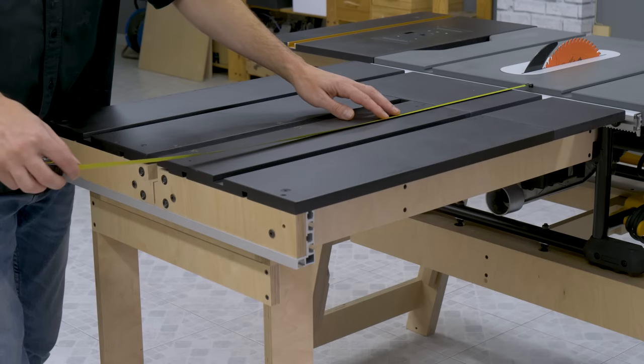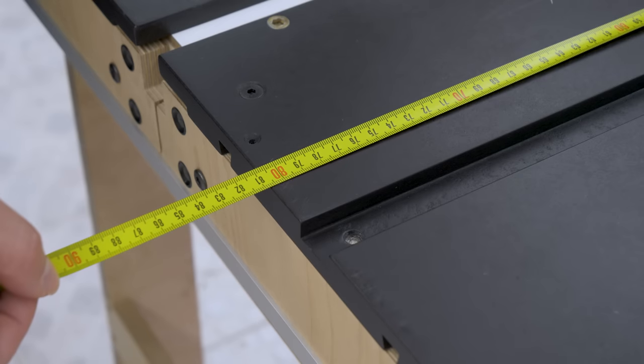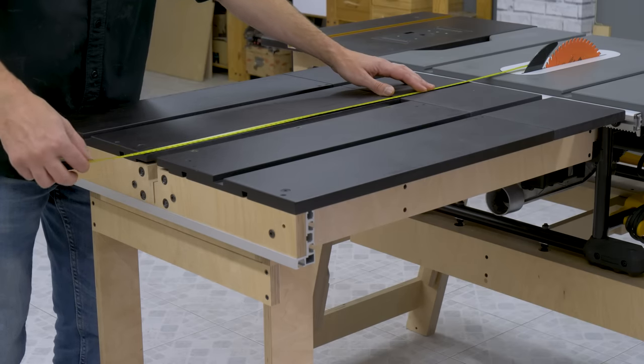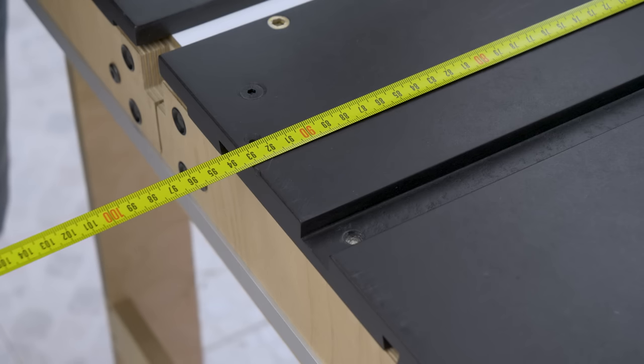Thanks to its outfeed table, I've managed to obtain an 80 cm extra support surface at the exit point of the cut, or around 93 cm if we measure it from the back of the blade.